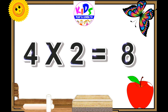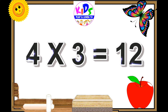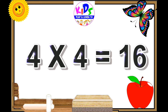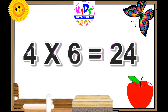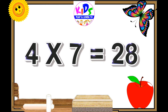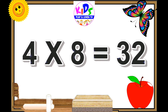Four ones are four. Four twos are eight. Four threes are twelve. Four fours are sixteen. Four fives are twenty. Four sixes are twenty-four. Four sevens are twenty-eight.